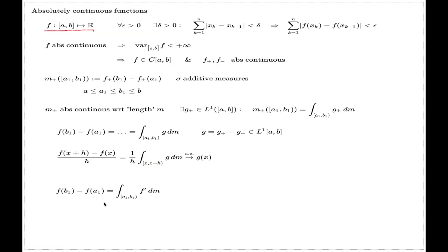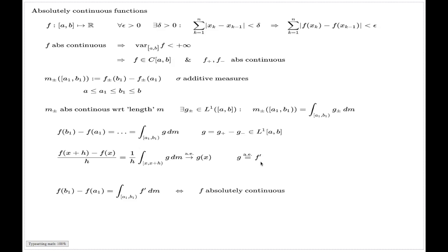We conclude that F(b) − F(a) equals the integral of F′, all from the assumption that F is absolutely continuous. In fact this is reversible: if a function F admits such an integral representation, then F will be absolutely continuous, where g is almost everywhere equal to the pointwise derivative of F. These are the brief comments on the three subjects: functions of bounded variation, absolutely continuous functions, and the fundamental theorem of calculus for Lebesgue integration.